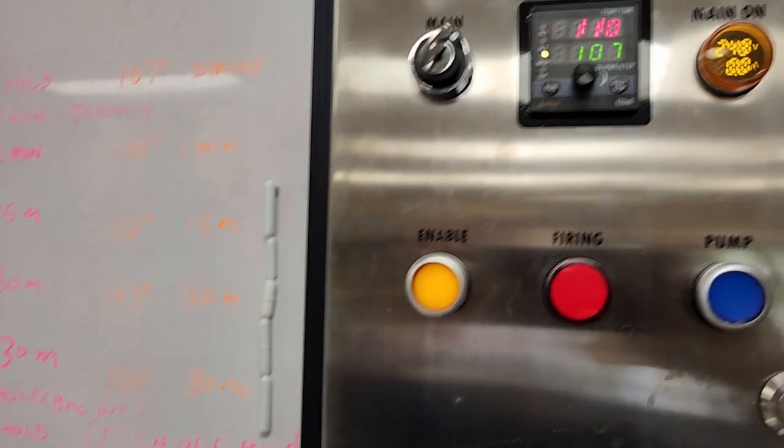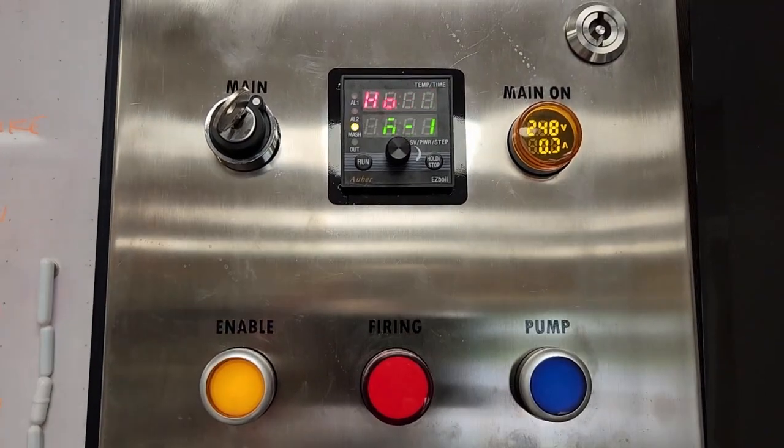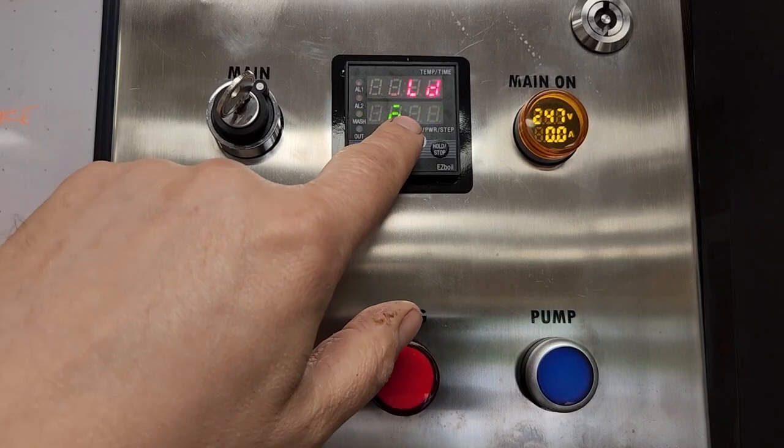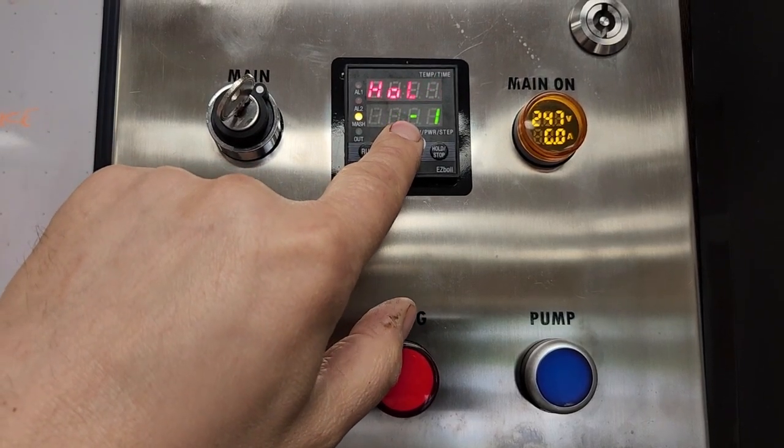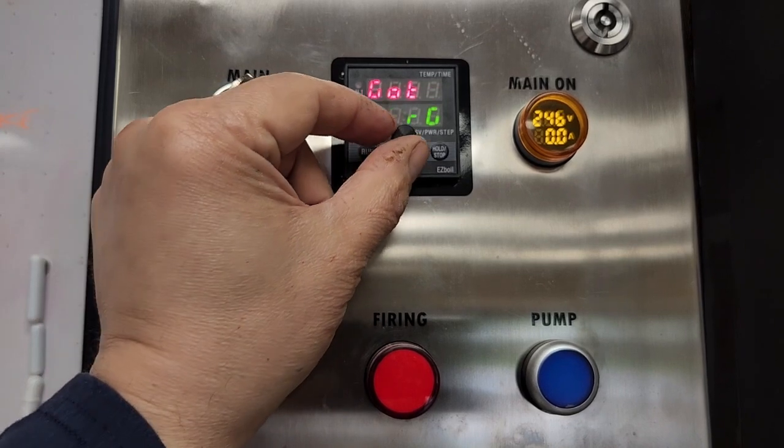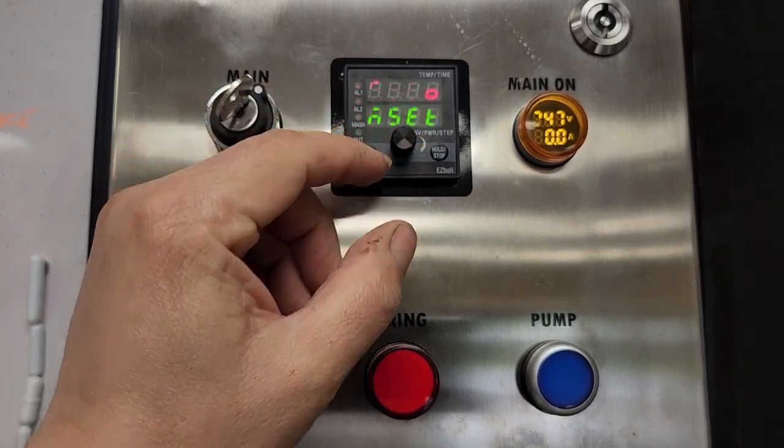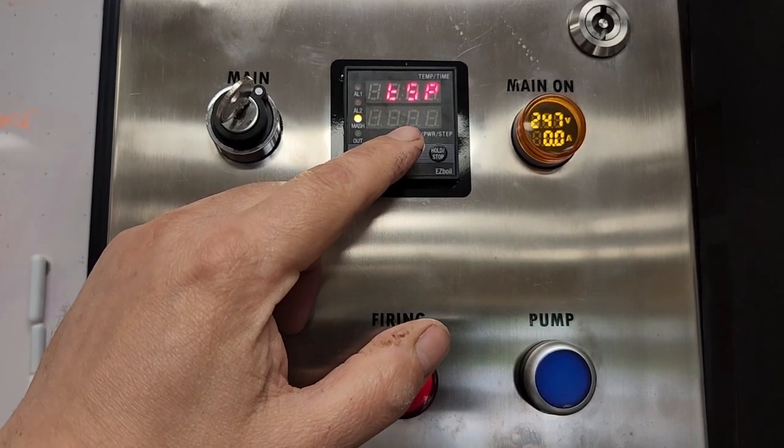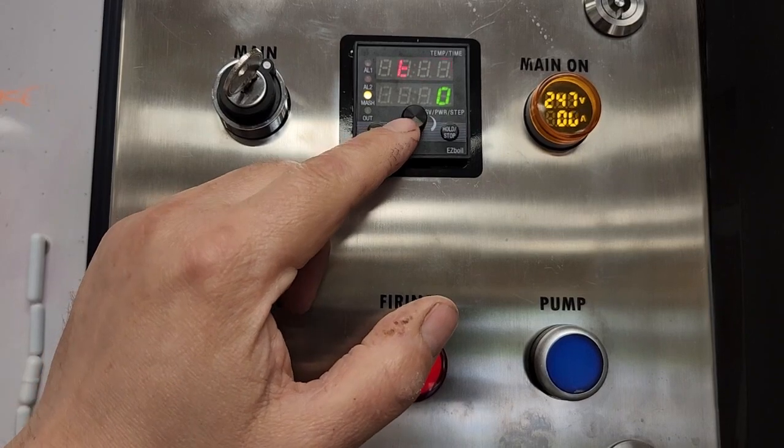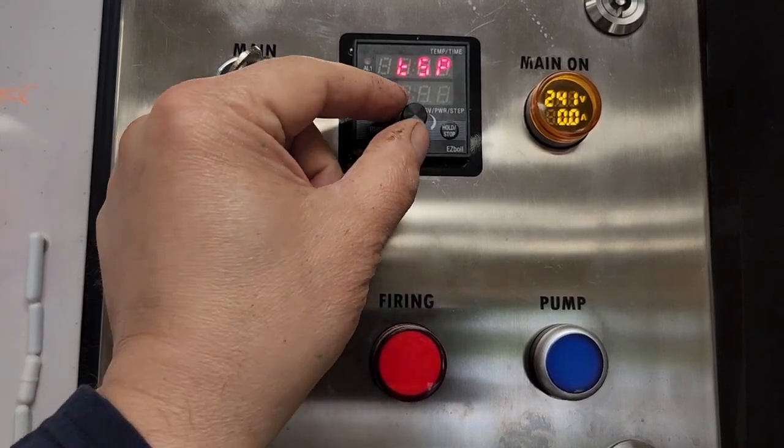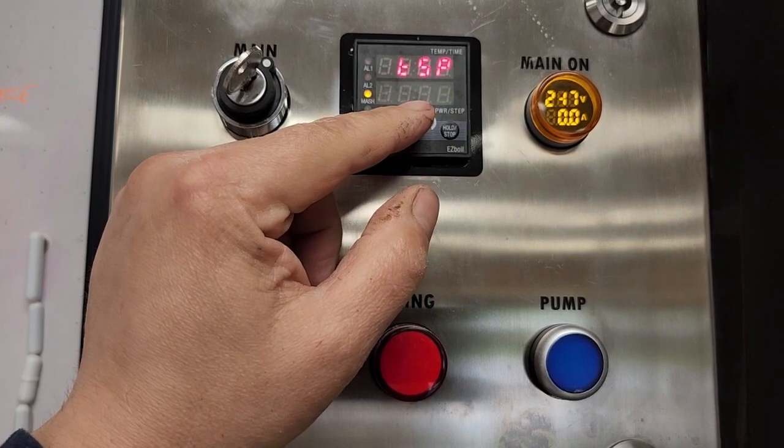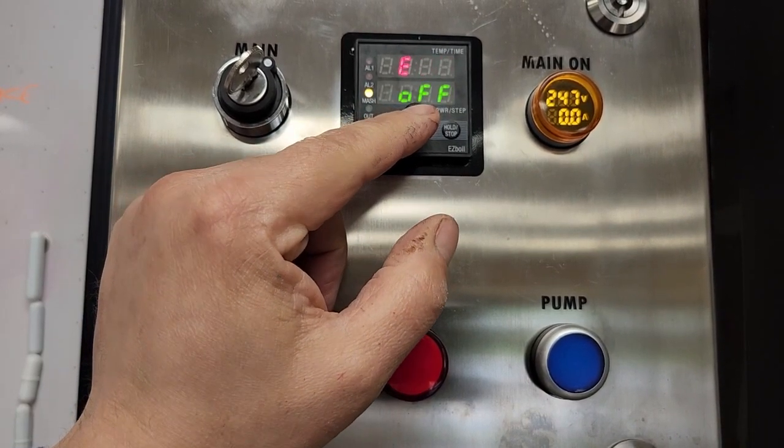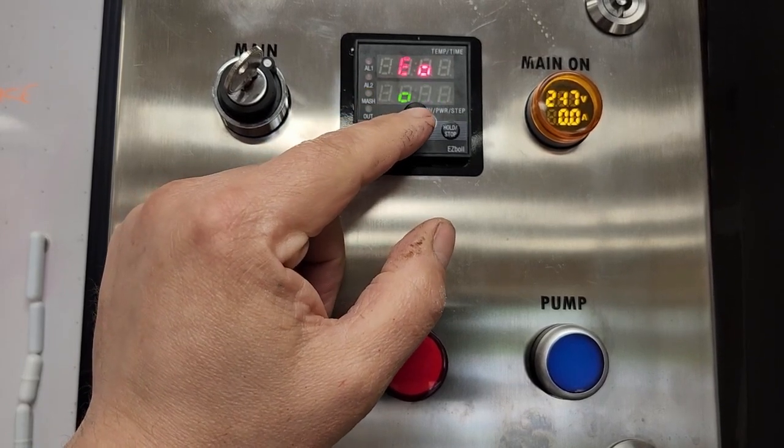When we get into the actual programming, the first thing is this is all predicated on having two features or a few features actually disabled on this system. Timer set point should be zero. That means that the timer will start immediately when it hits the temperature that you have set, and it will turn off at the end.